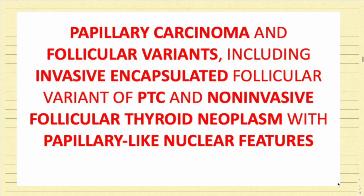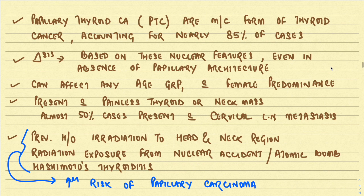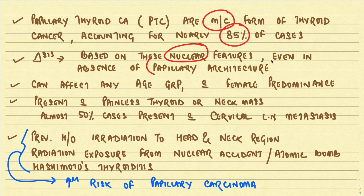Now we are going to understand the individual tumors, beginning with papillary carcinoma of the thyroid — both the conventional variety and the follicular variant, including the precursor NIFTP and the invasive encapsulated follicular variant. Papillary thyroid carcinoma is the most common form of thyroid cancer, accounting for nearly 85 percent of cases. The diagnosis of papillary thyroid carcinoma is based only on the nuclear features, even in the absence of papillary architecture.